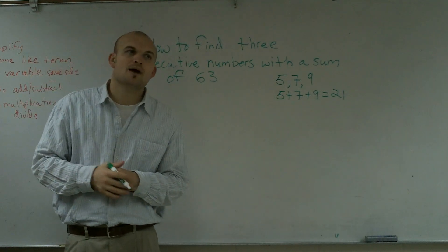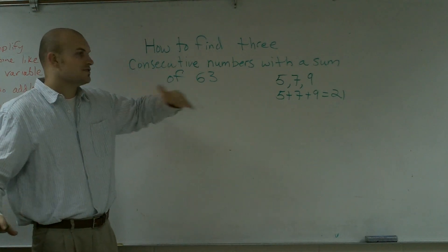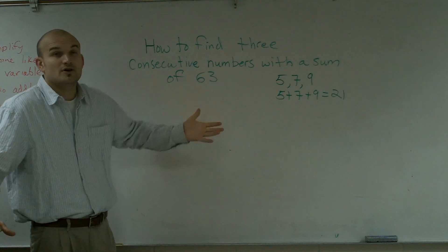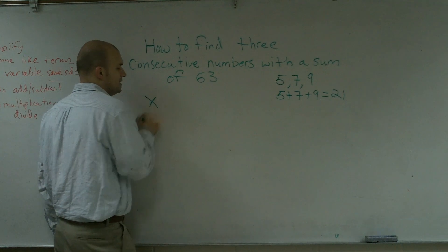So we have a little problem. To find out how to find the consecutive numbers for 63, first of all, we don't know where to start. And so if we don't know where to start, we don't know what the first number is, we're always going to give that a variable, which we label x.